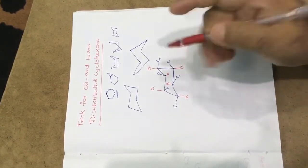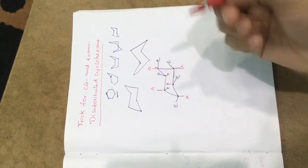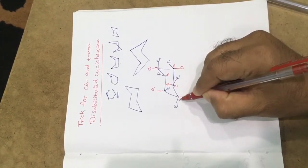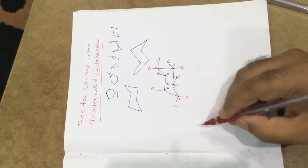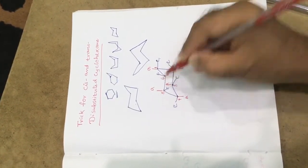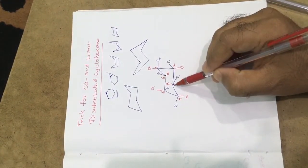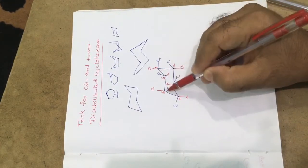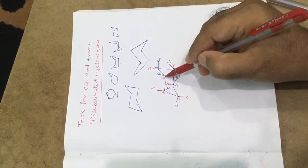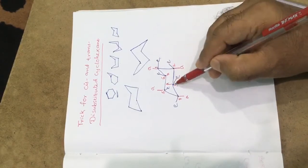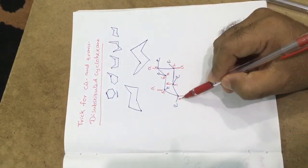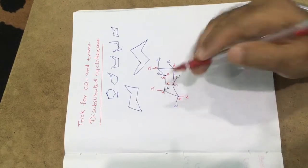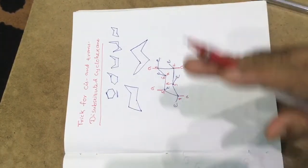The equatorial positions alternate as well: this is down, this is up, this is down, this is up. Now I'll number the positions. You can start anywhere since all positions are equivalent — position one, two, three, four, five, and six. With respect to position one, I'll explain cis and trans for 1,2; 1,3; and 1,4 relationships.